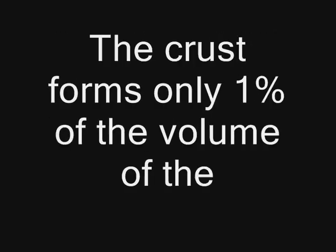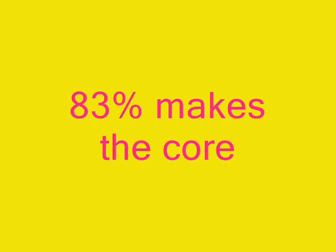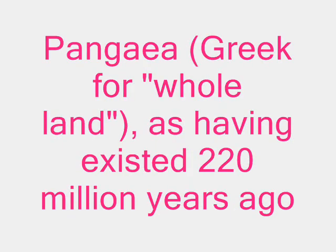German meteorologist and geophysicist Alfred Wegener introduced the theory of continental drift, describing a supercontinent called Pangaea — Greek for 'whole land' — as having existed 220 million years ago.